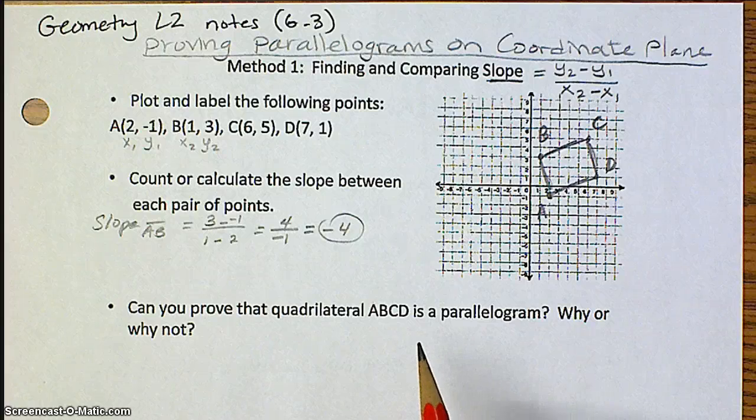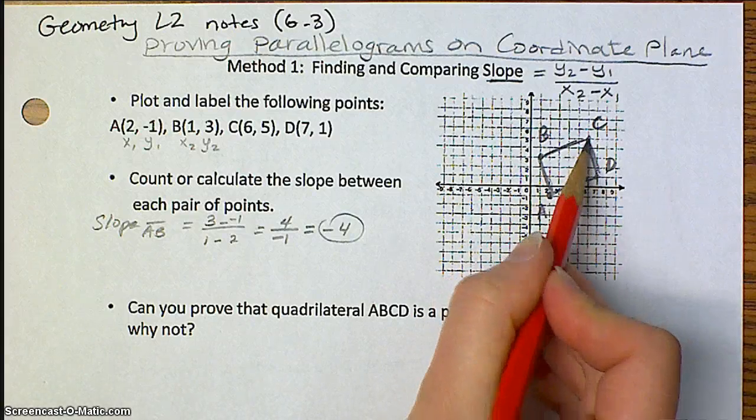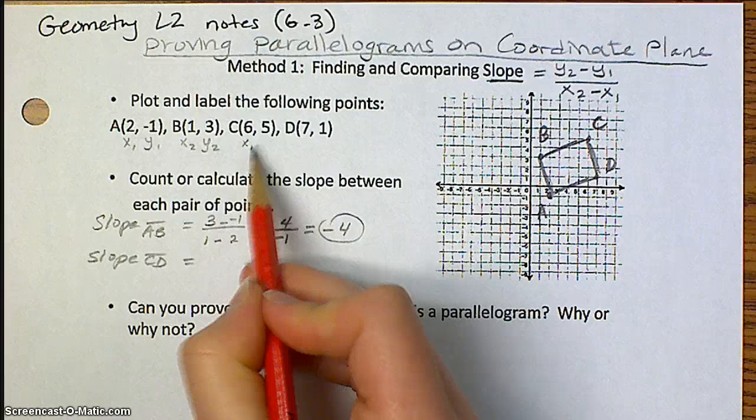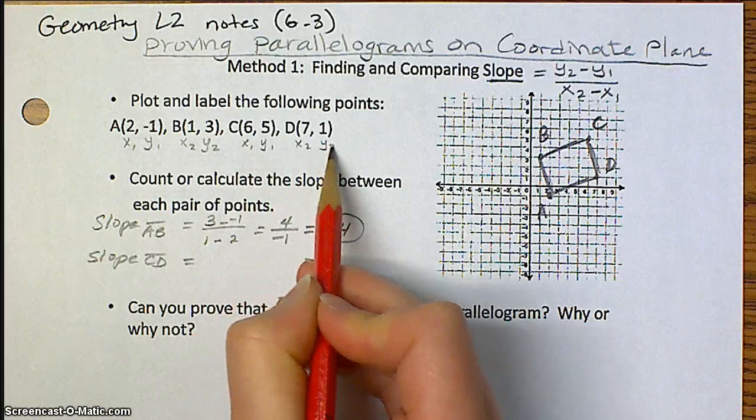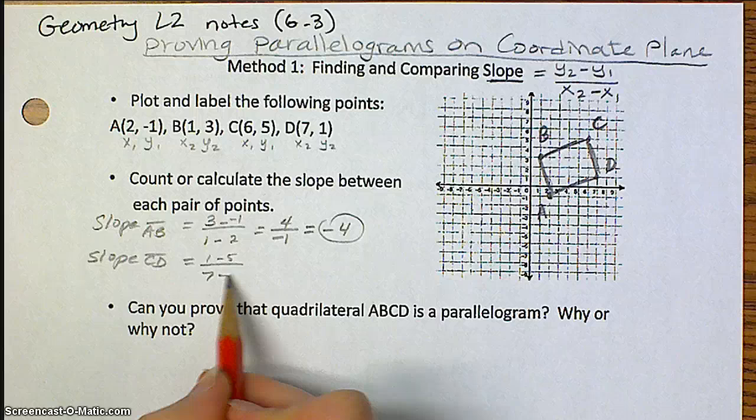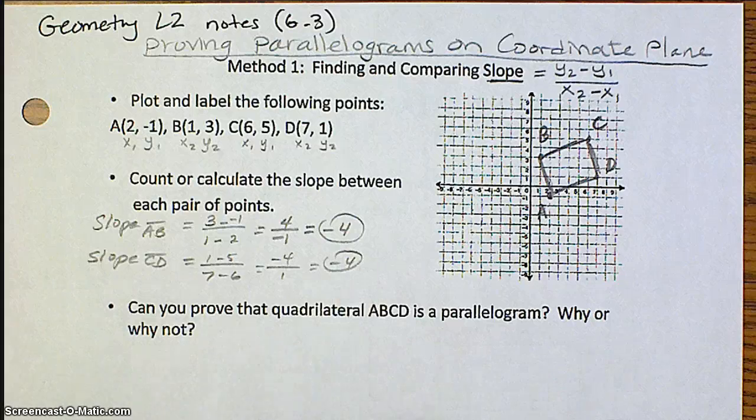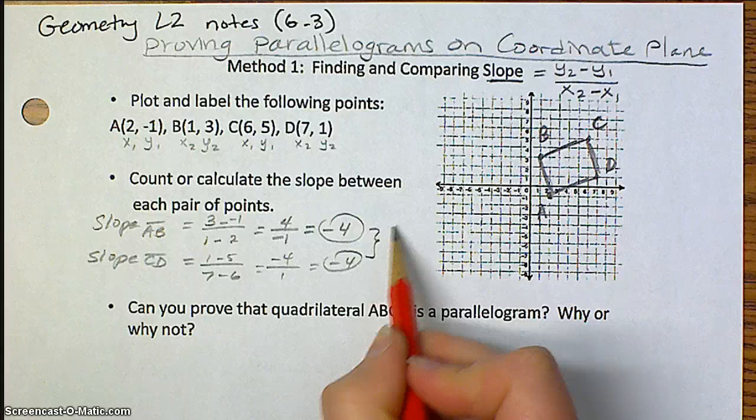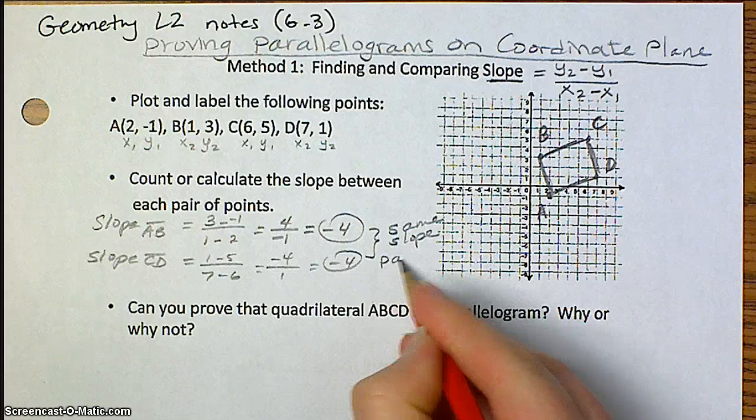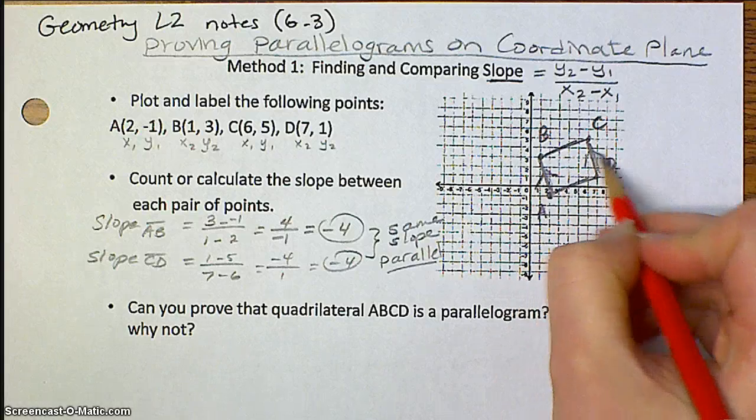Now, since we know in a parallelogram that opposite sides are parallel, AB would be opposite of CD. So I now want to find the slope of side CD, using the same method. So 1 minus 5 over 7 minus 6, which will give me negative 4 over 1, which is also negative 4. Now you need to compare these slopes. Well, they're the same. Whenever two segments have the same slope, you know that they are parallel. So right now we've proven that one pair of opposite sides are parallel.